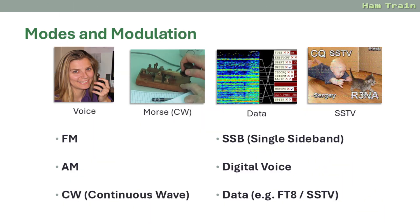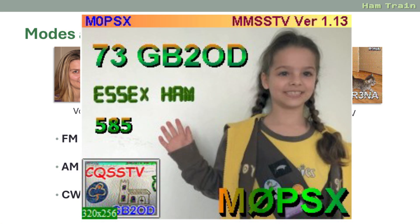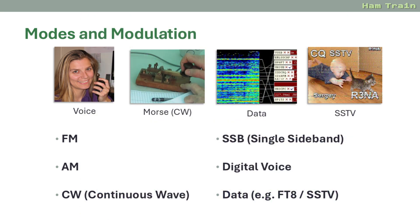Modes and modulation. There are a number of different ways that radio amateurs can communicate. Most commonly these days we use voice. Originally, CW — Morse code — was the main mode of operation and is still in use today. We can also use data to send messages using keyboards, and a mode called Slow Scan TV. You'll need to be familiar with the terms: FM (frequency modulation), AM (amplitude modulation), CW (continuous wave, also known as Morse code), SSB (single sideband), digital voice, and data modes such as FT8 and SSTV.